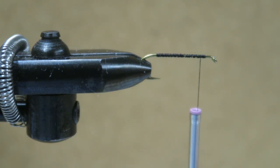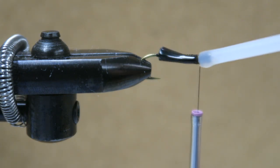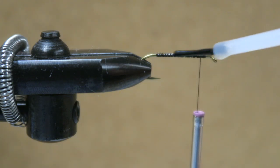I don't really do this too often, but because that yarn likes to slide around a little bit, I like to put just a little bit of cement on the top of the hook there on the thread base. It helps keep it from moving around.